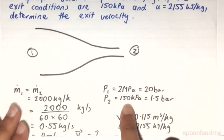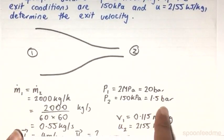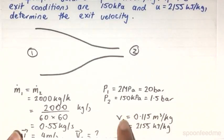We also know that P2 is 150 kPa, which is 1.5 bar. And we know our specific volume at state 1 to be 0.115 m³ per kg and our internal energy at state 2 to be 2155 kJ per kg.